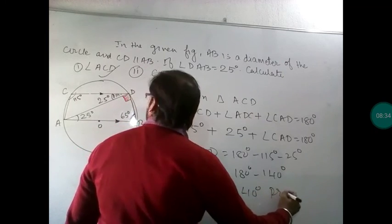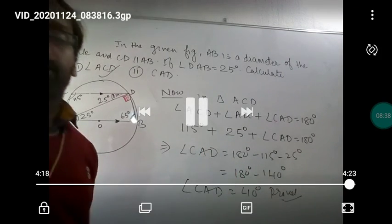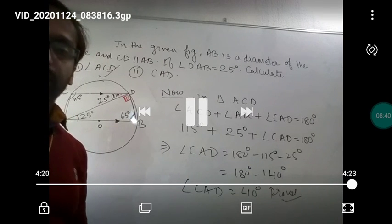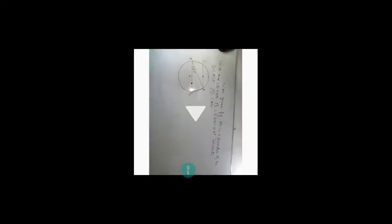So angle CAD is equal to 40 degrees. We proved this using the concept of the angle in a semicircle and the properties of the cyclic quadrilateral. I hope you will all practice at home. In the next class we will learn some new topics. Till then, take care. Thank you class, thank you very much.